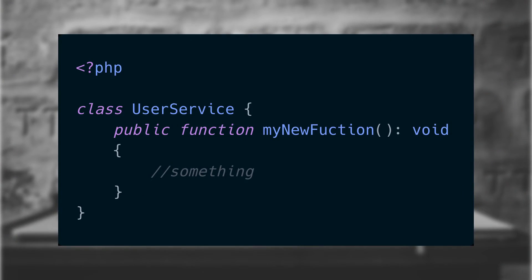Let's discuss a real world example that happened to me. I was working on a new feature that required me to edit a class — in this case we'll call it the user service class. I made my changes and went to commit my code. When I did so, I accidentally deleted the second S in the keyword 'class'.